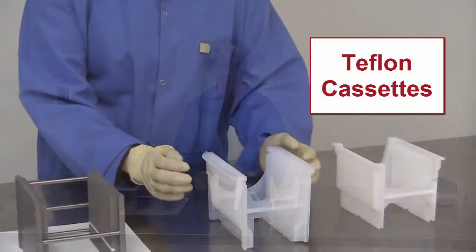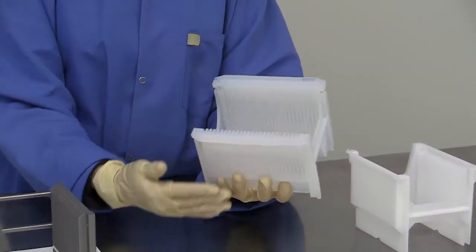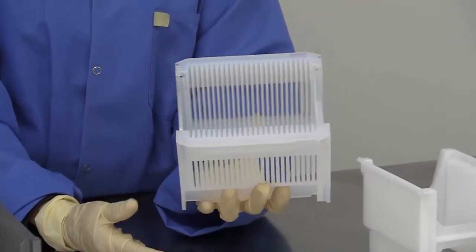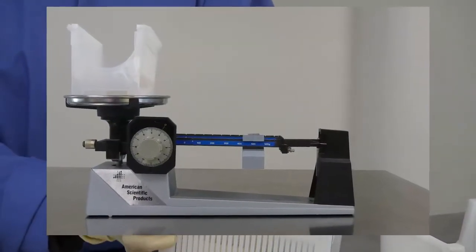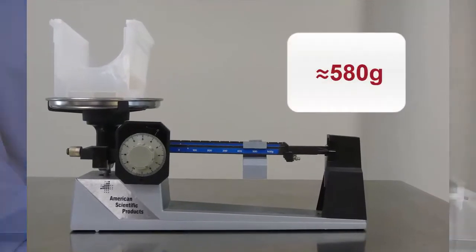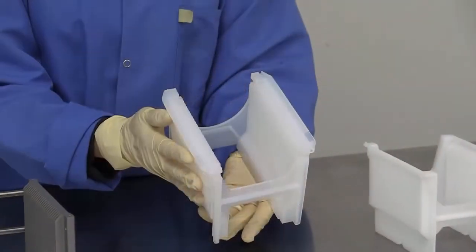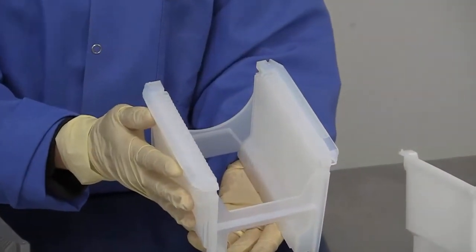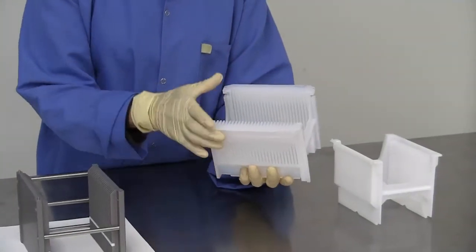Teflon cassettes are inert to most chemicals, so are used at wet processing stations and may be heated up to 150 degrees C. Although they may look like ordinary plastic, they are much heavier. Note that Teflon absorbs chemicals over time, so this is one reason why each station has dedicated cassettes to ensure against cross-contamination. Teflon cassettes are soft and tend to flex.